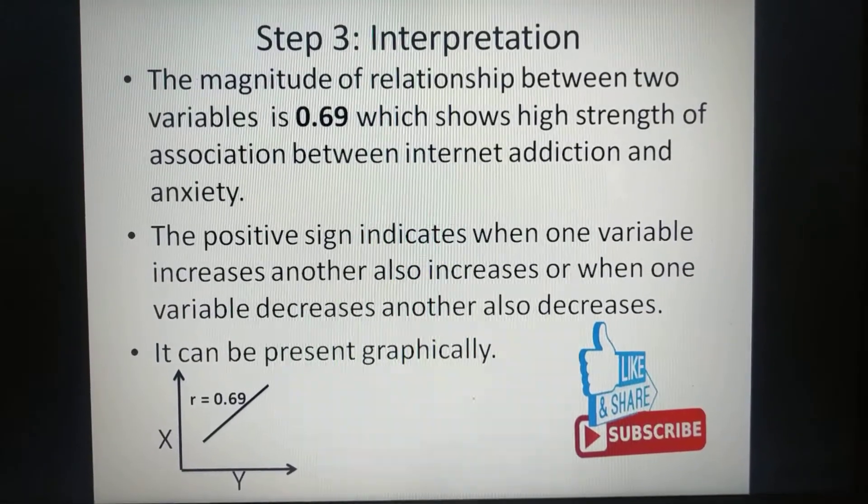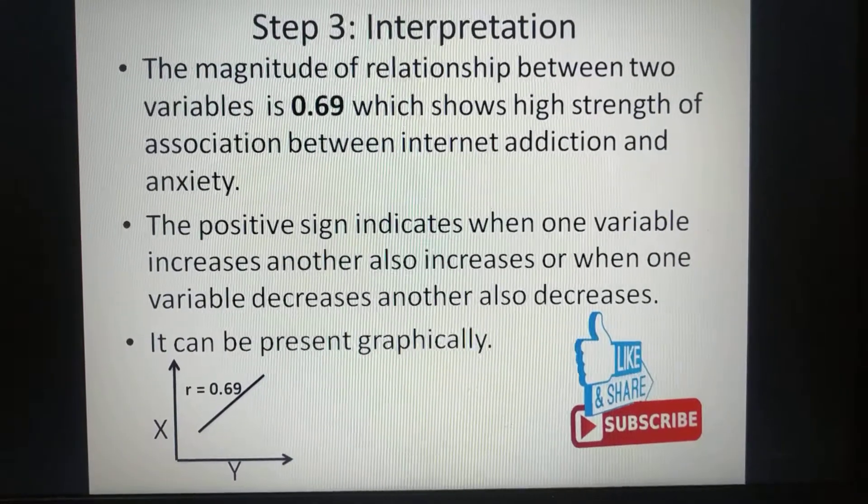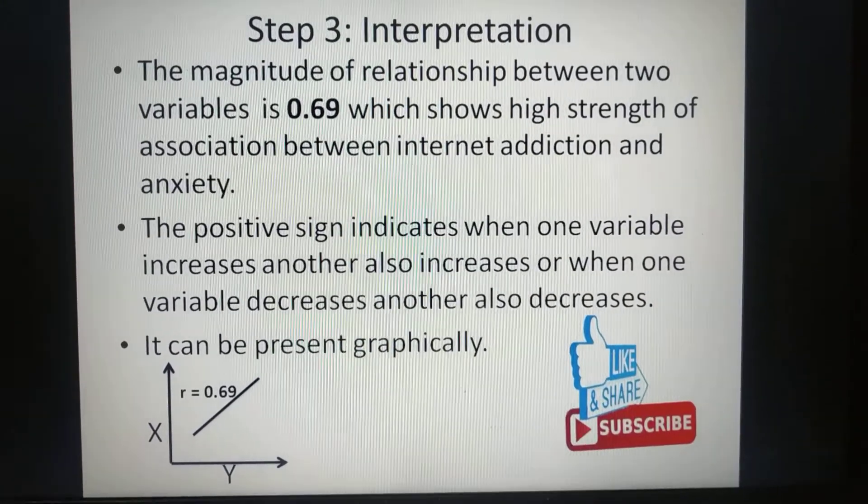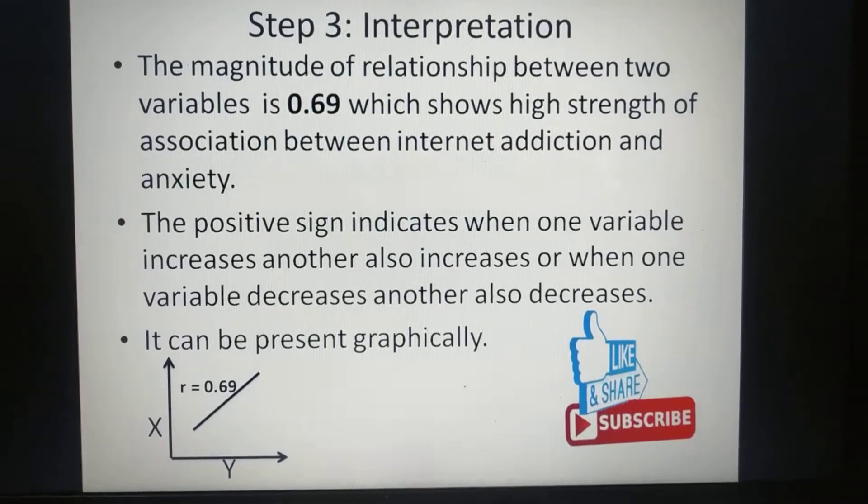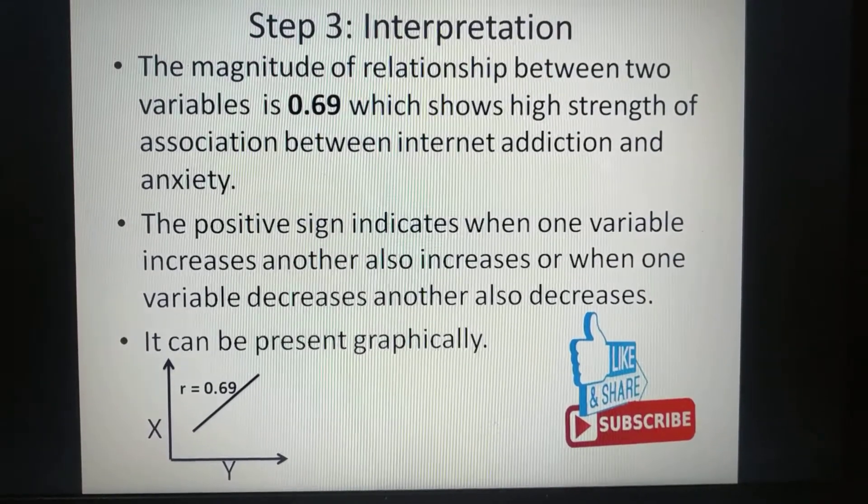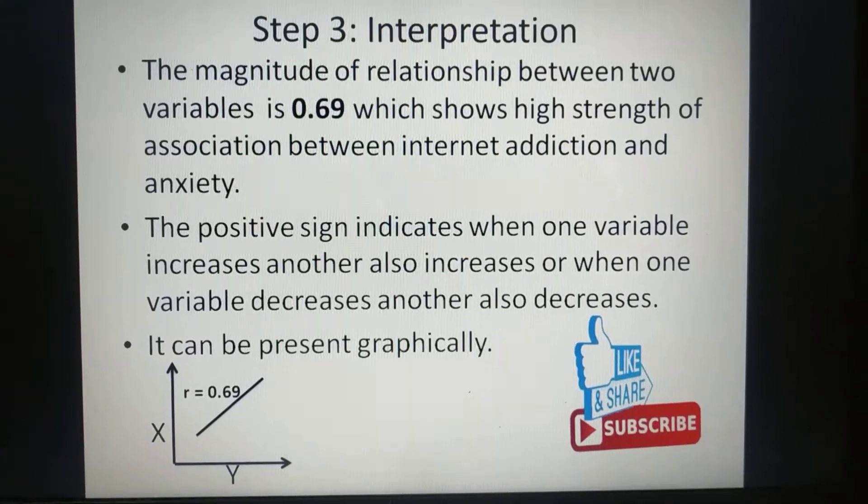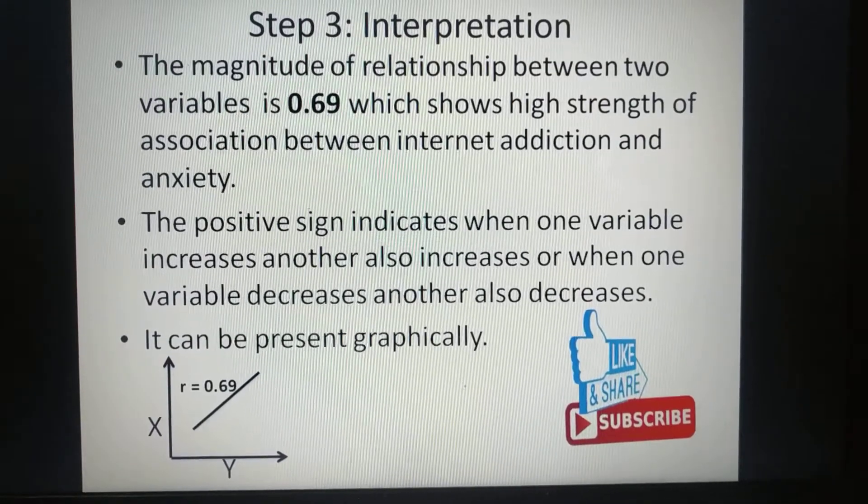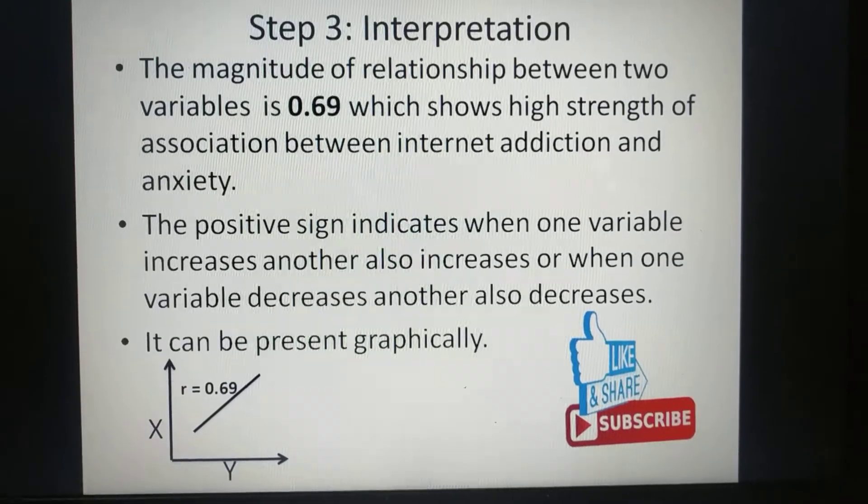This is time for interpretation. The magnitude of relationship between two variables is plus 0.69 which shows high strength of association between internet addiction and anxiety. The positive sign indicates when one variable increases another also increases or when one variable decreases another also decreases. It can be present graphically.